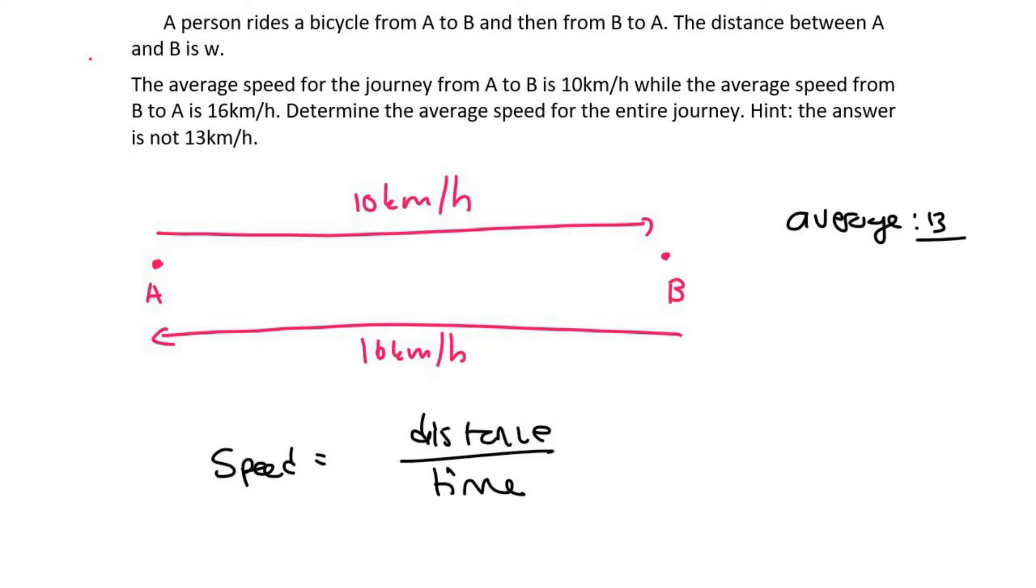So they tell us that the distance between A and B is W. So that's W, and then coming back is also W. So what is the total distance that this person is going to travel? It's not W squared. It's just W plus W, which is 2W.